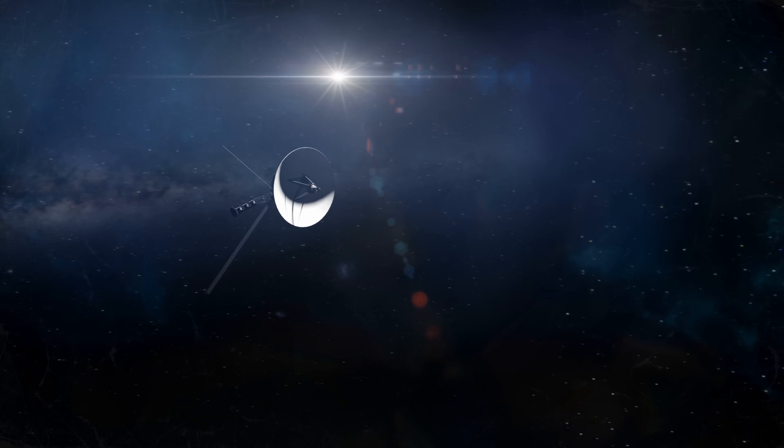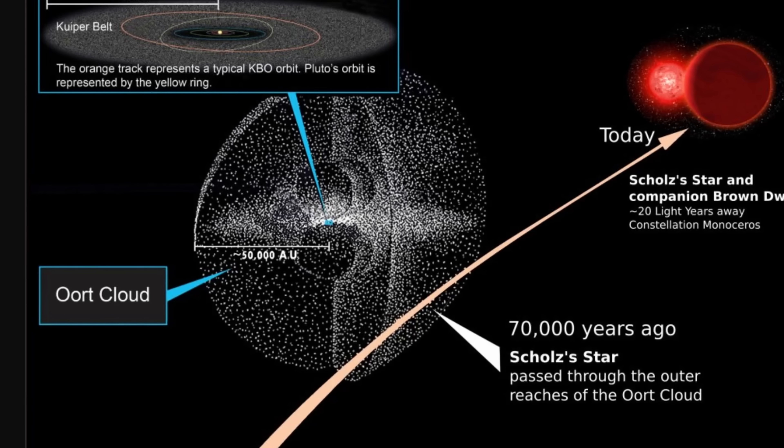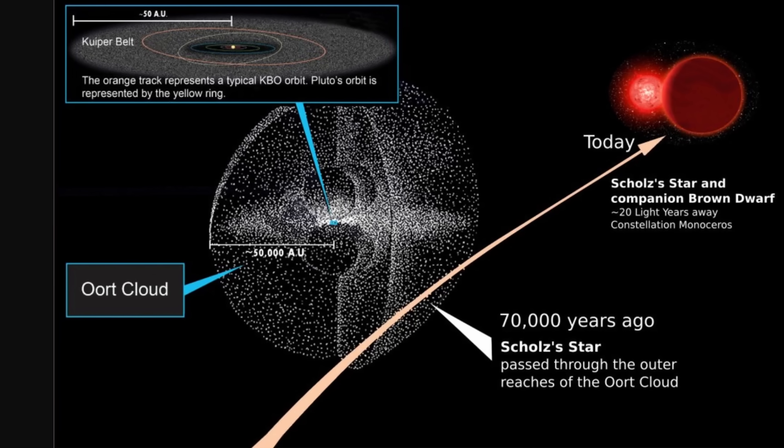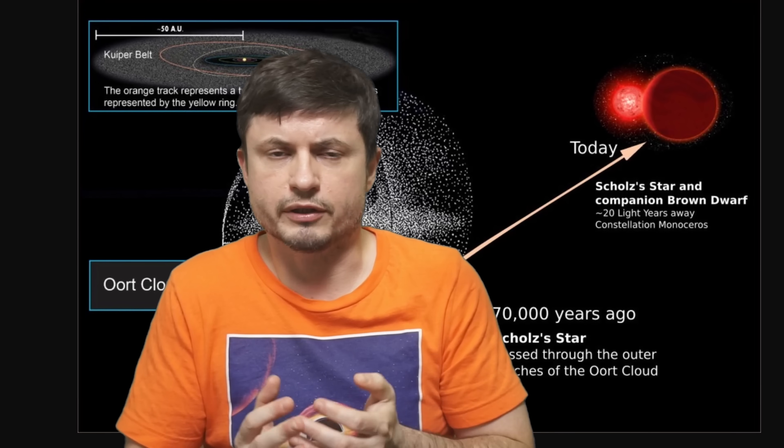Just to give you some perspective here, one of the fastest space probes out there, Voyager 1, is only going to reach Oort cloud in approximately 300 years. By then it's no longer going to be functional. But it's actually going to take 30,000 years to pass through this cloud, despite its relatively fast velocity.